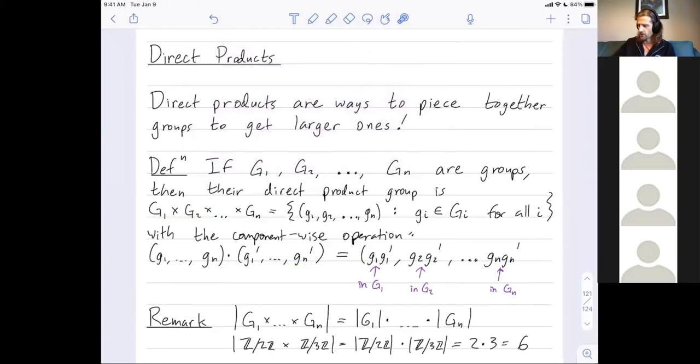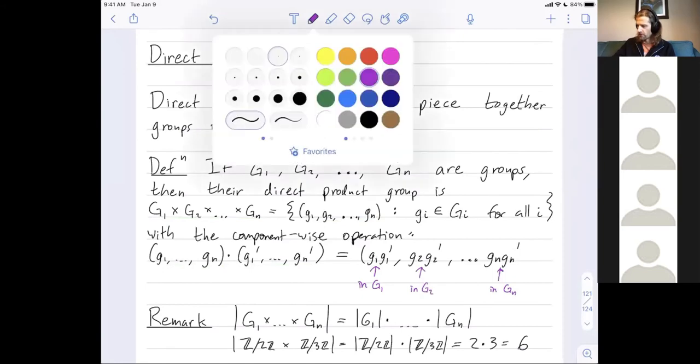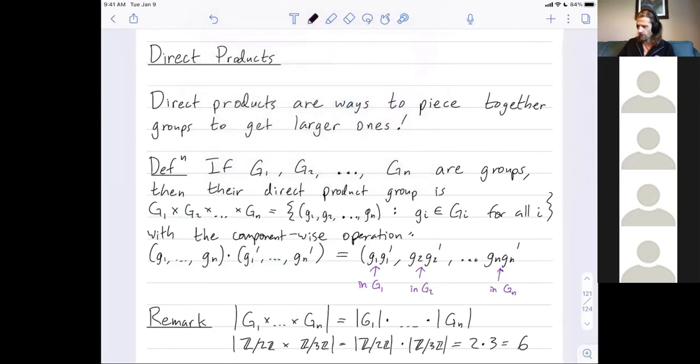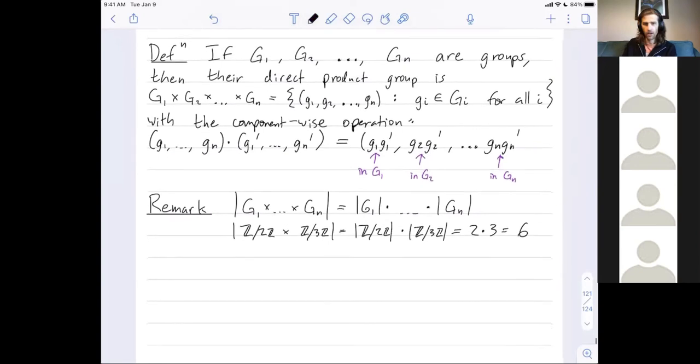Okay, let's do two examples right now. Let's look at Z mod 2Z direct product Z mod 3Z. Its elements should be ordered pairs, just an element in Z mod 2Z comma an element in Z mod 3Z.